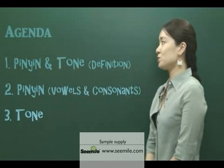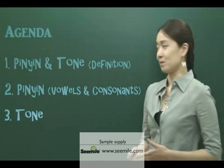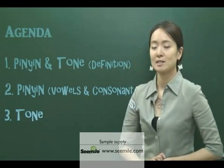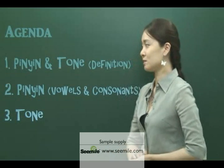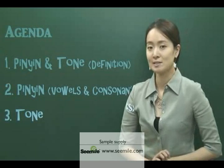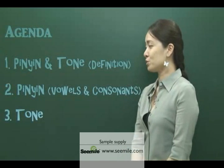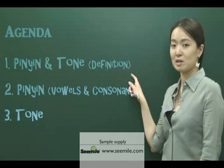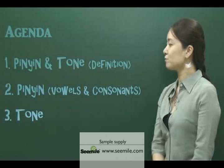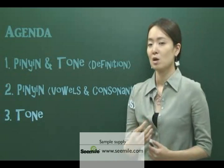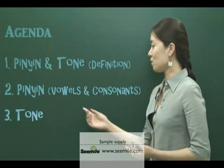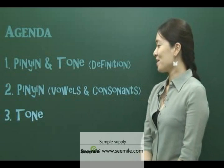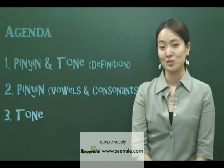Let me introduce you to our whole lesson plan. Seven Days for Chinese Mandarin Pronunciation consists of seven days of classes, and it's divided into three parts. Today we are going to talk about the definition and meaning of Pinyin and Tone. From tomorrow, we are going to directly go into the vowels and consonants, and that might take four days. And finally, we are going to talk about Tone.